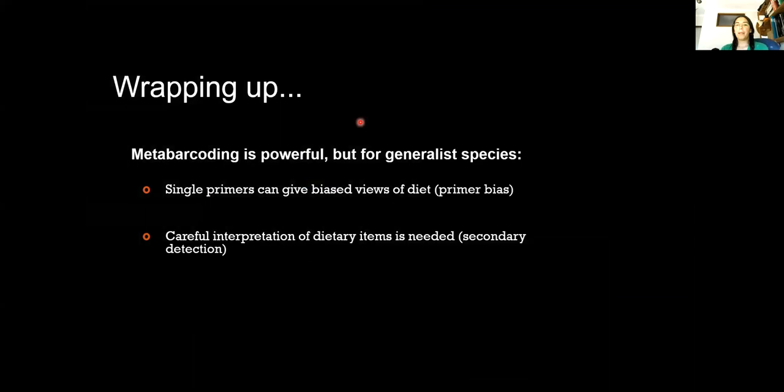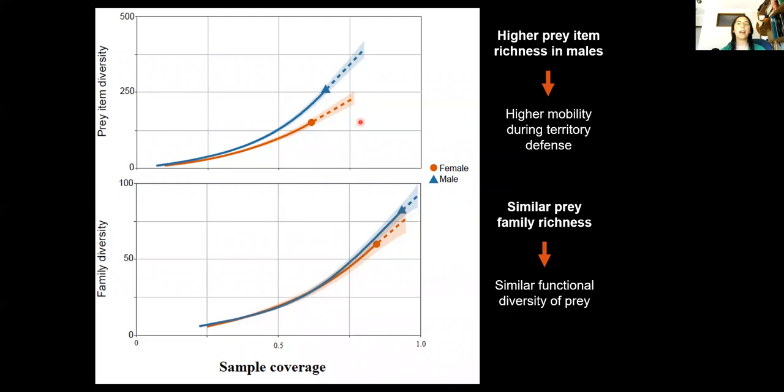We have a primer bias situation where morphology seems fairly similar to 18S and 16S but not so much with ZBJ. This COI marker is failing to detect some taxa, for example Hymenoptera, while detecting a lot of other things which from the morphological perspective almost don't even occur in the diet. Lepidoptera and Diptera clearly dominating the amplifications of COI.